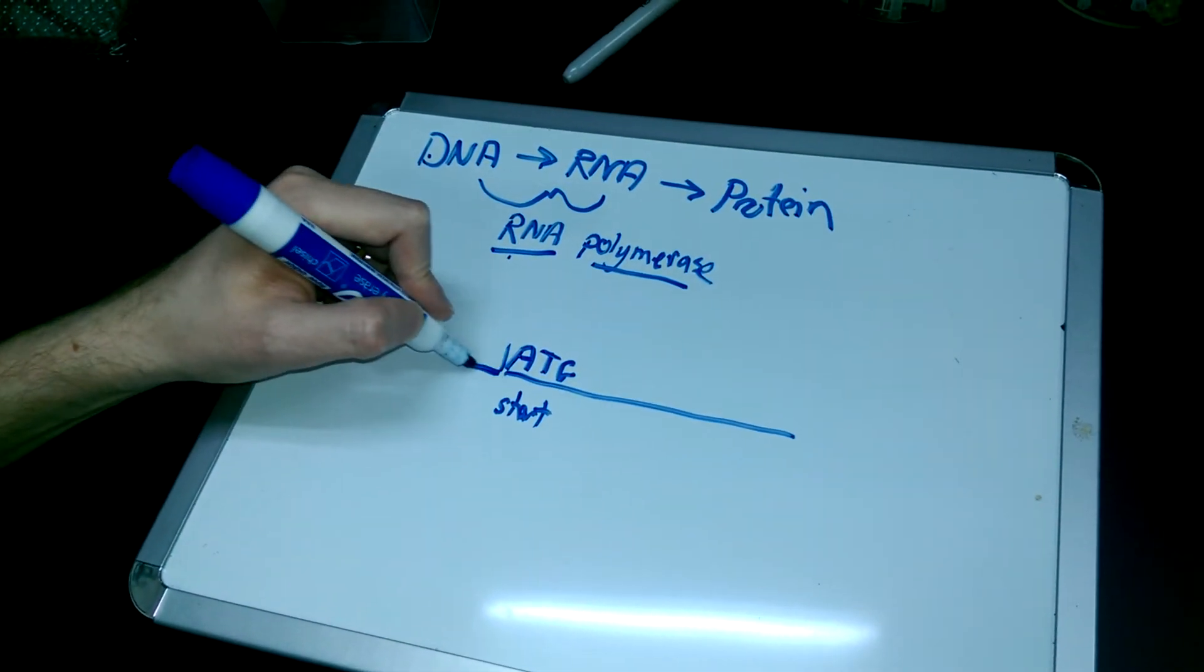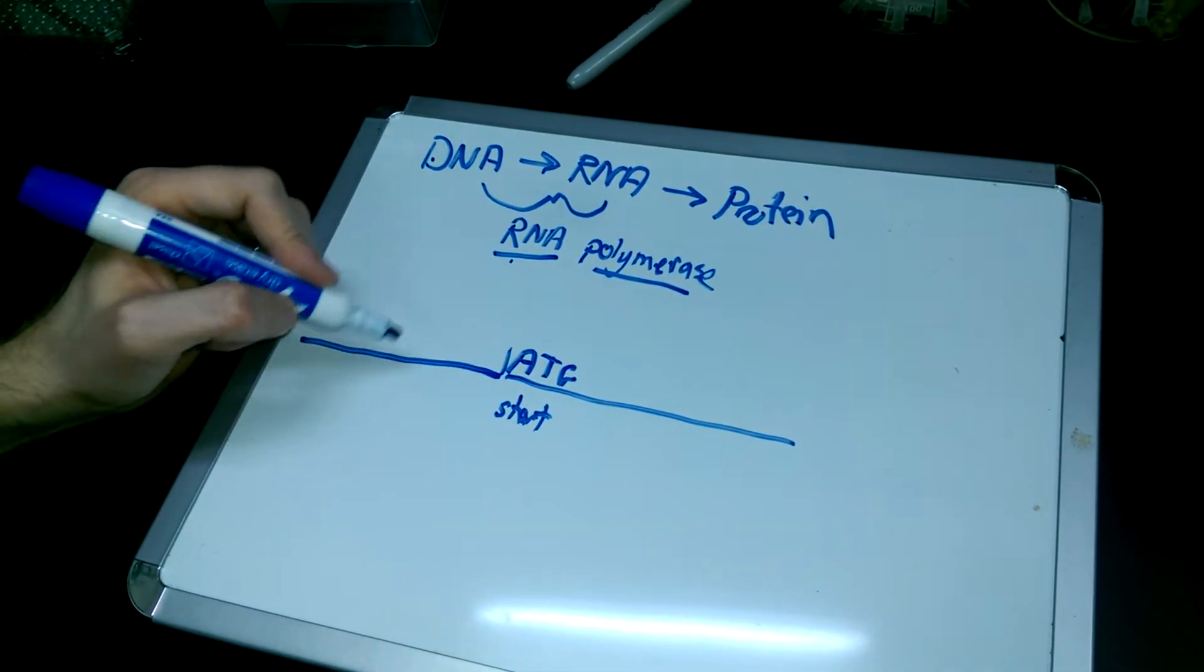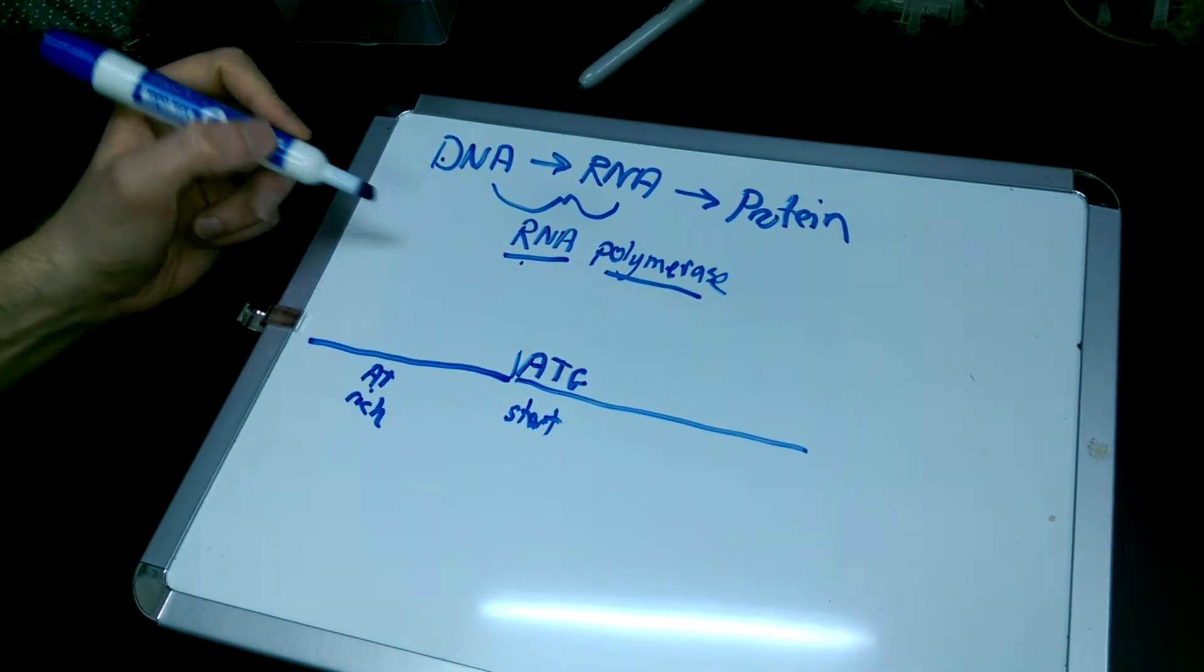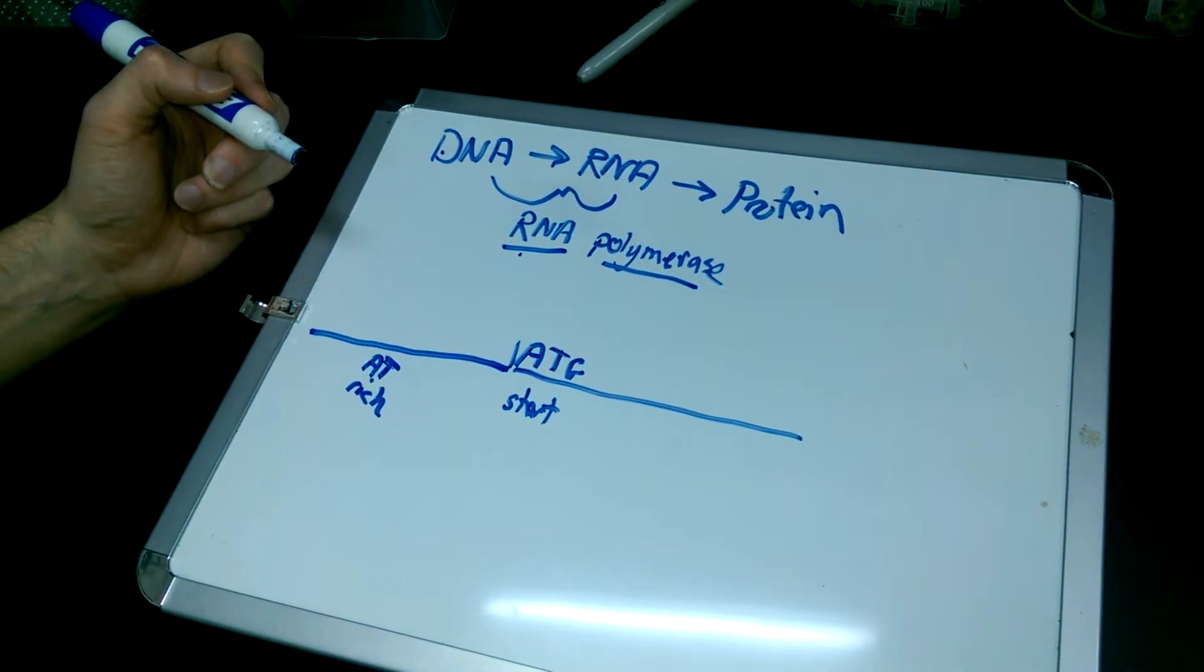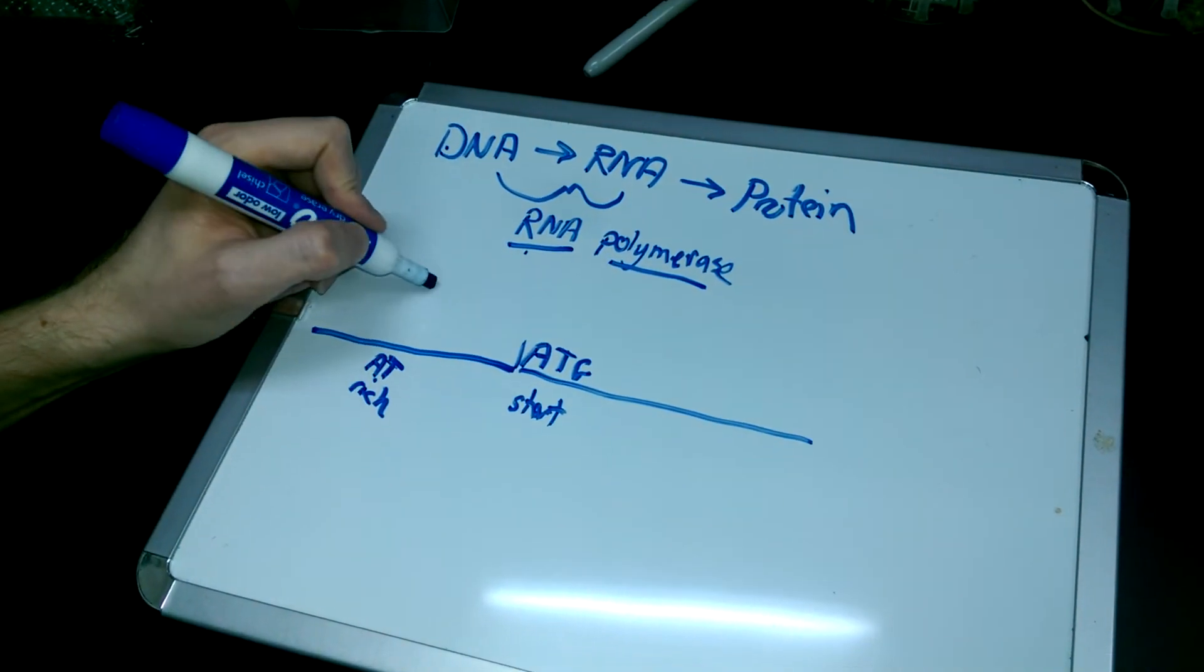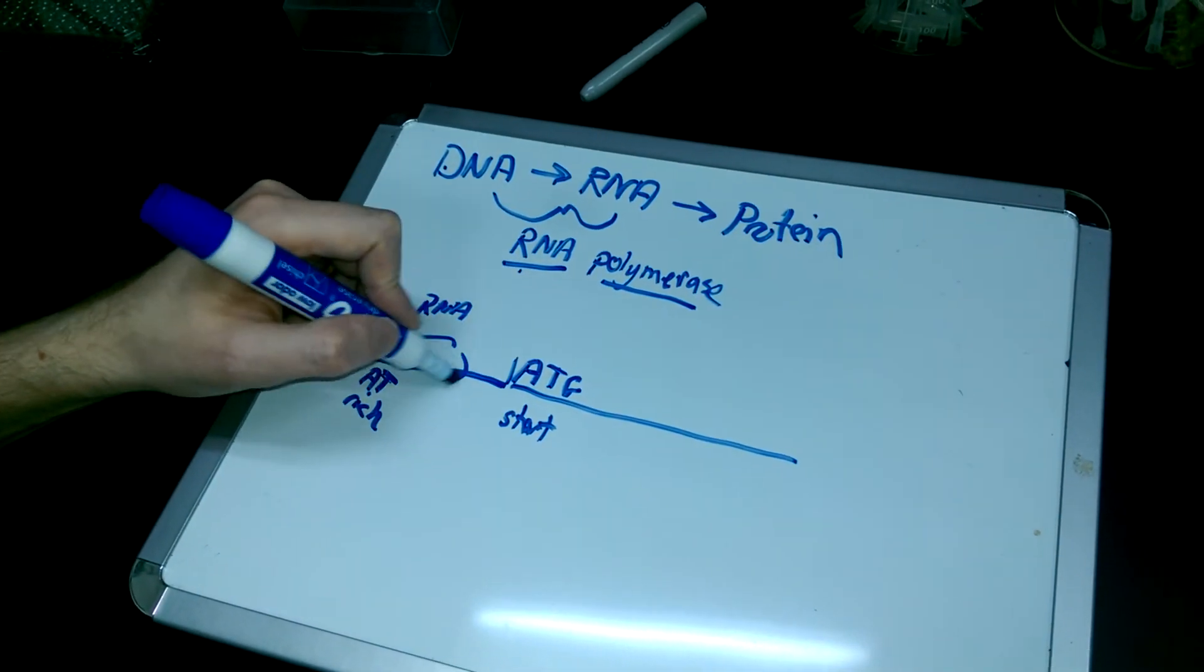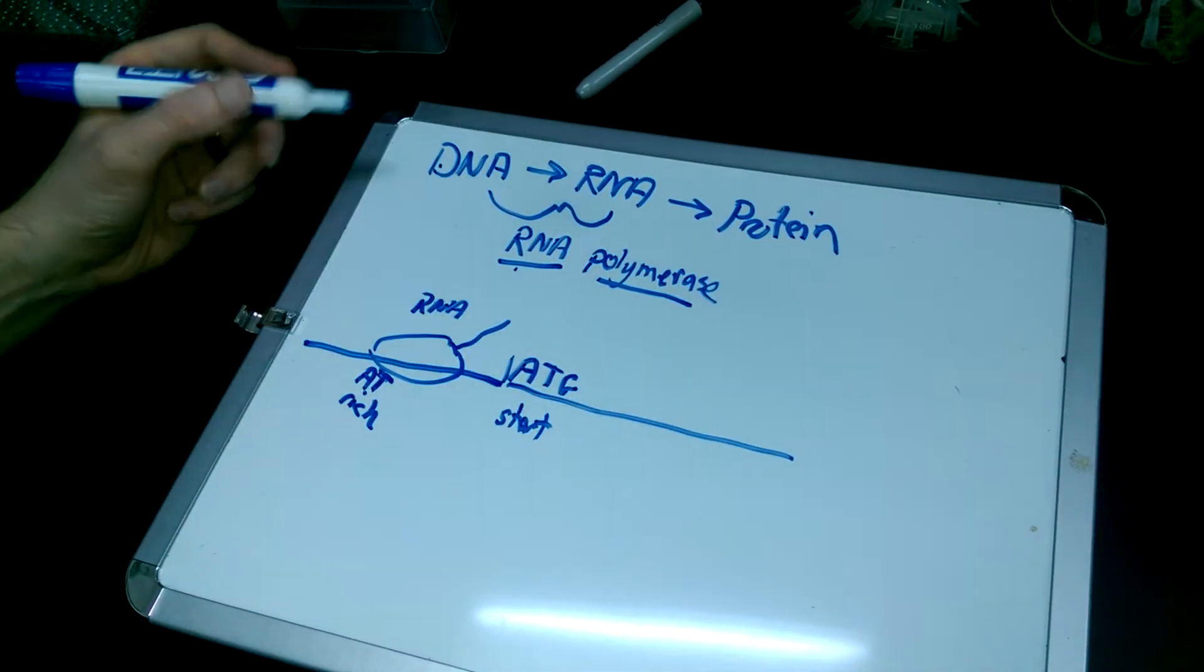And then upstream of that, you have all the bells and whistles needed to basically call RNA polymerase. Usually there is an A, T rich region. And A's and T's are important because those are easier to pull apart than the C's and the G's. And the RNA polymerase will basically recognize little motifs in here, sit down on here, and basically start transcribing an RNA off of this.